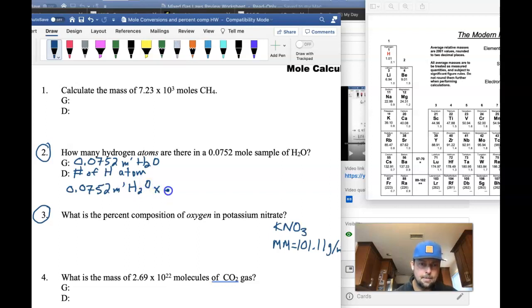And then we want to find out, well, how many actual water molecules do we have? And we know that one mole of anything, including water, has 6.02 times 10 to the 23rd H2O molecules. And this is kind of the new trick, is we're going to say, well, how many atoms of hydrogen are in that sample?